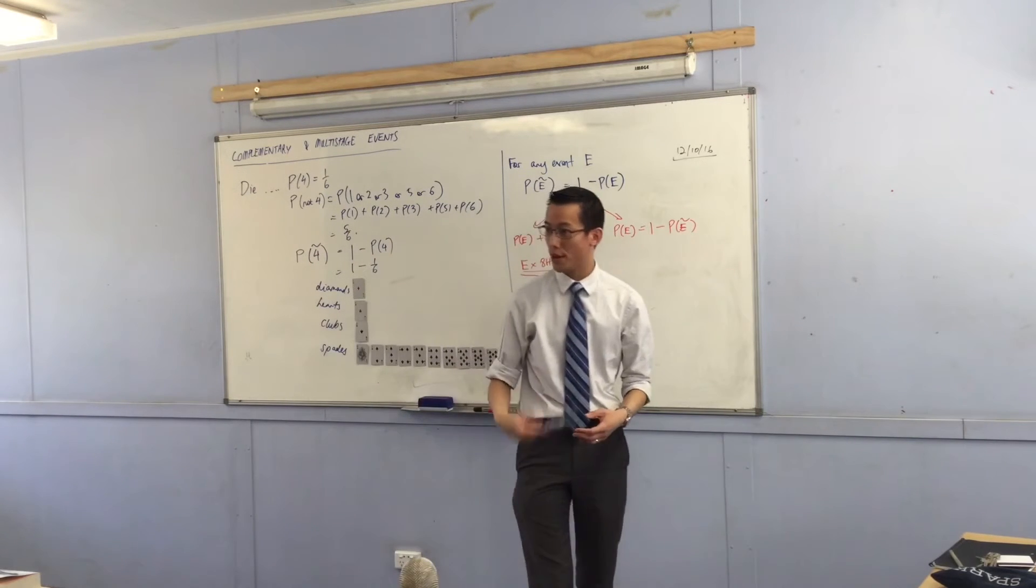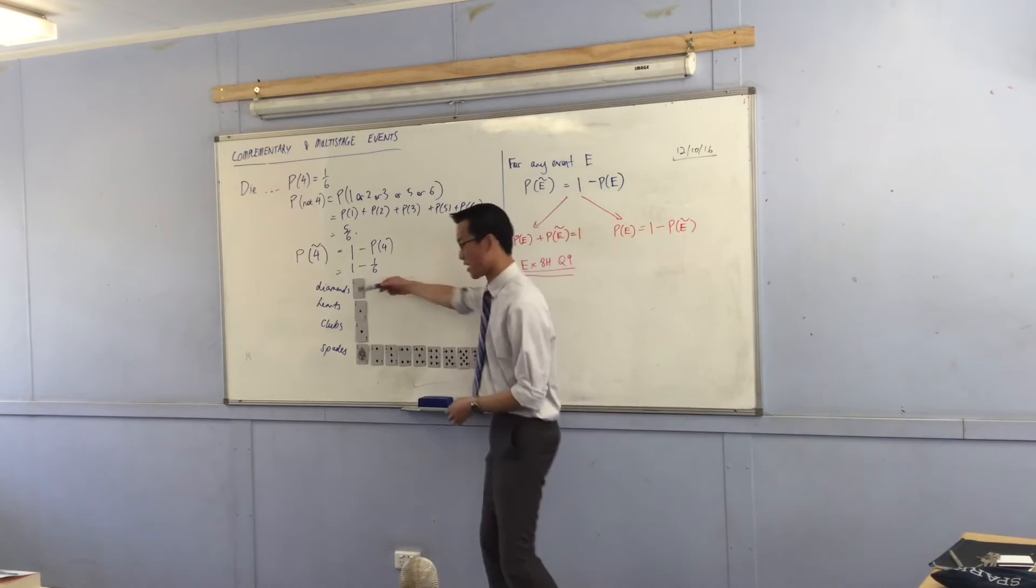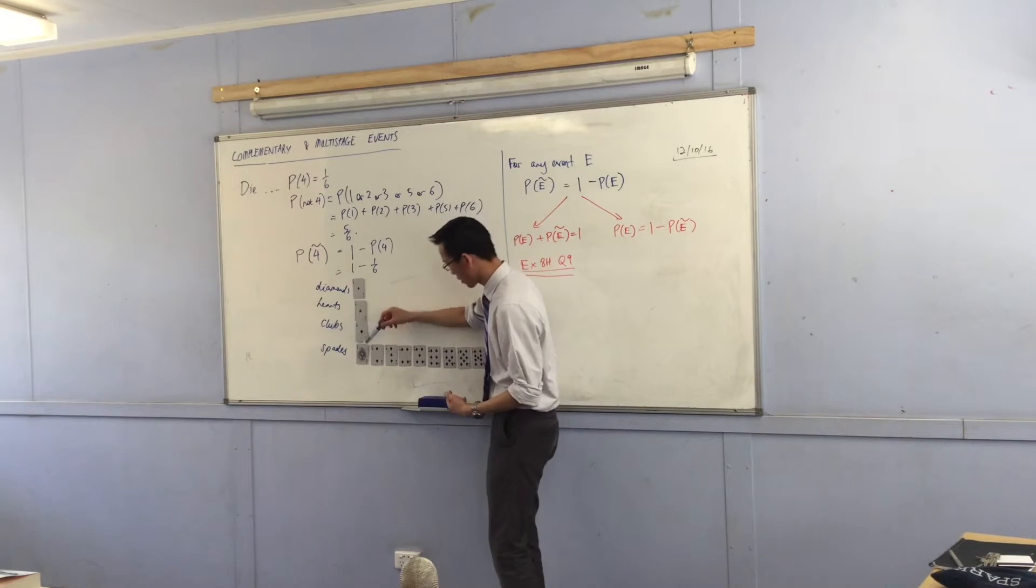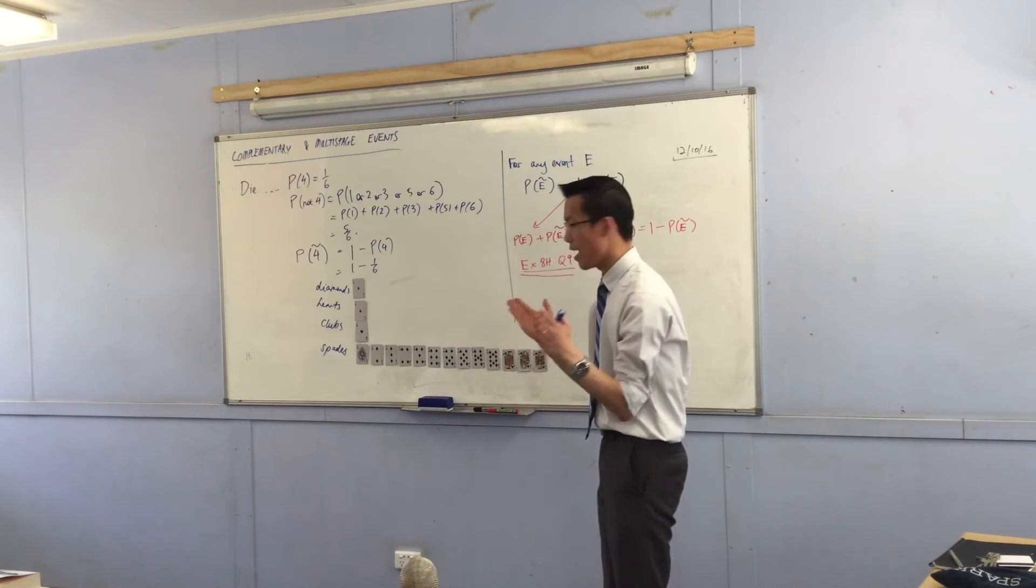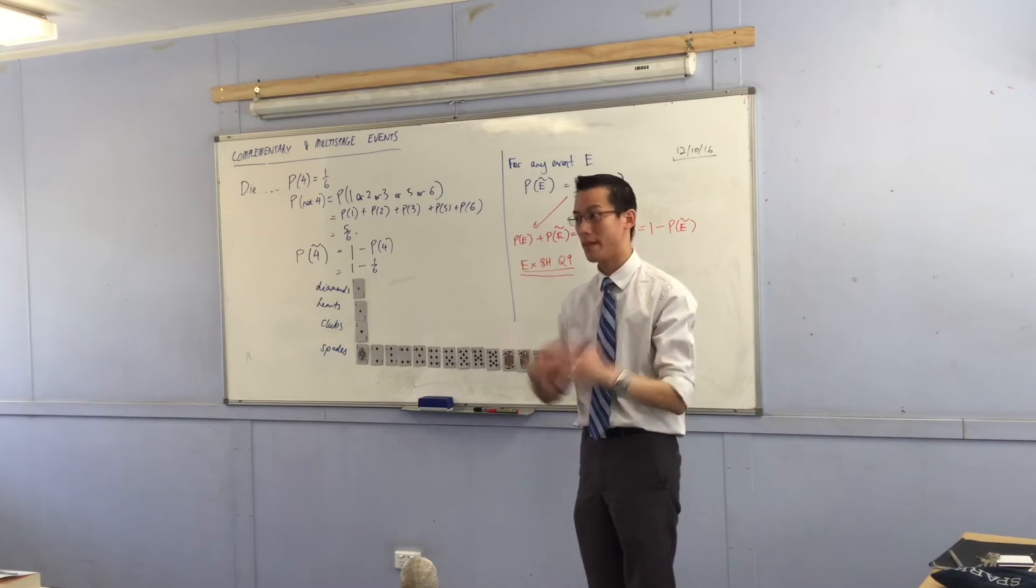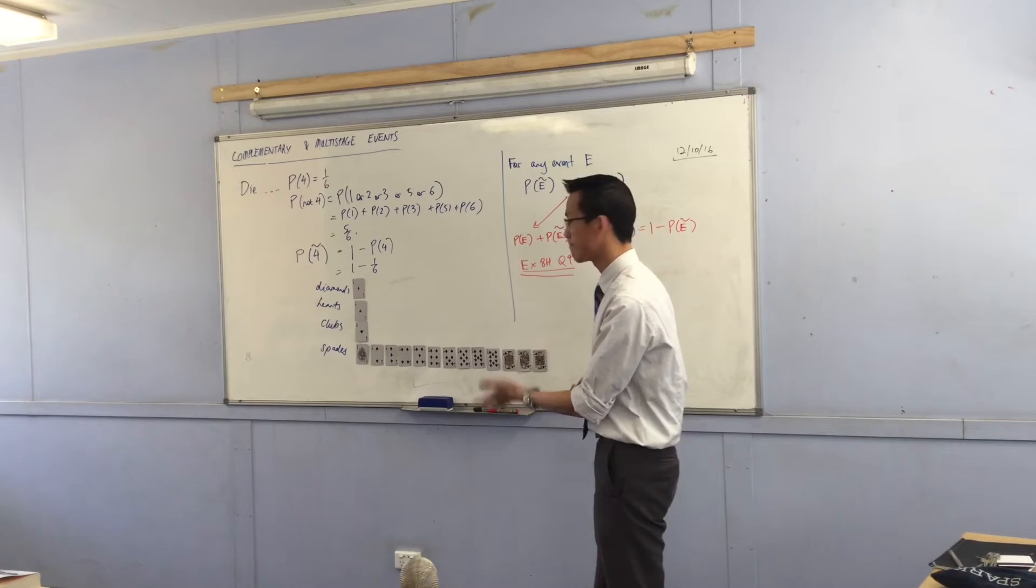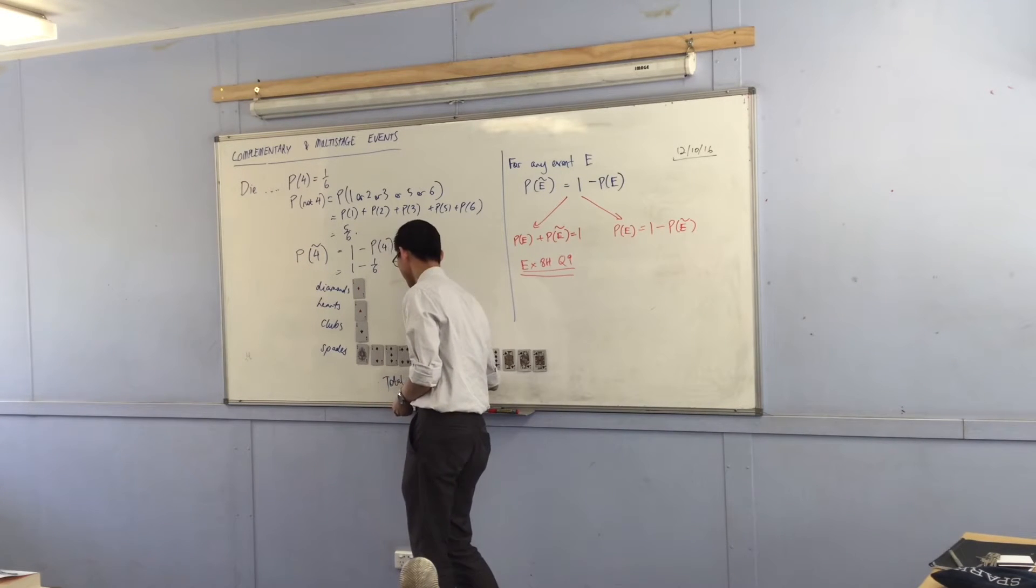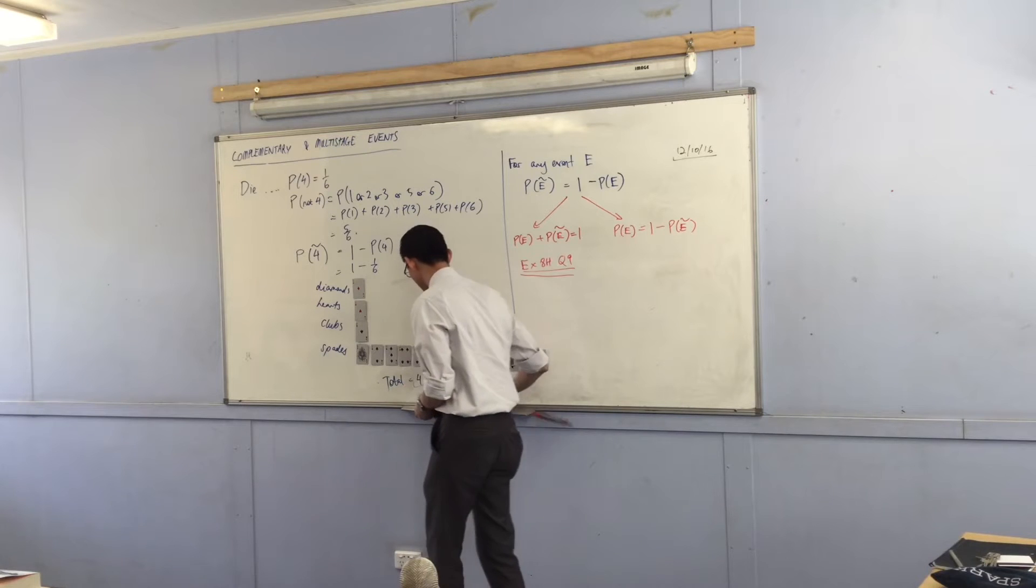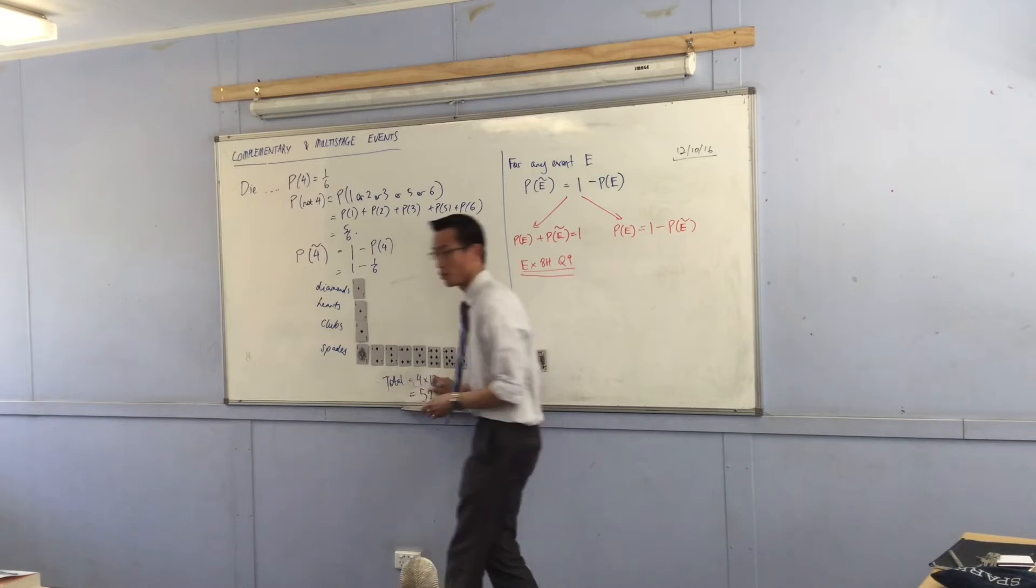So, what you get is the same 13 cards in diamonds, the same 13 in hearts, same in clubs, same in spades. So, if you've got 13 different kinds of cards and 4 copies of all of them, then in total you've got 4 times 13 is 52.